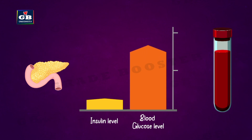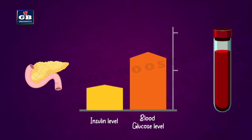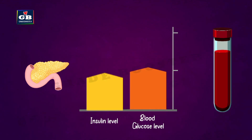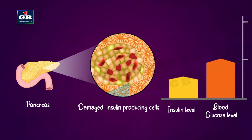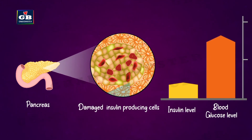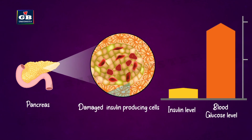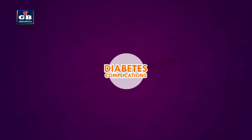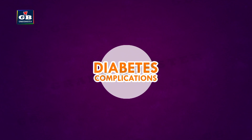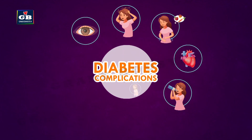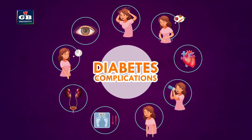If blood glucose levels rise, a hormone called insulin is secreted by the pancreas to control raised blood sugar levels. In some people, due to malfunctioning of insulin-producing cells in the pancreas, very little insulin is produced, leading to high blood sugar — a condition called diabetes. High levels of blood sugar cause harmful effects, and diabetic people are more prone to heart, kidney, eye, and nerve diseases.